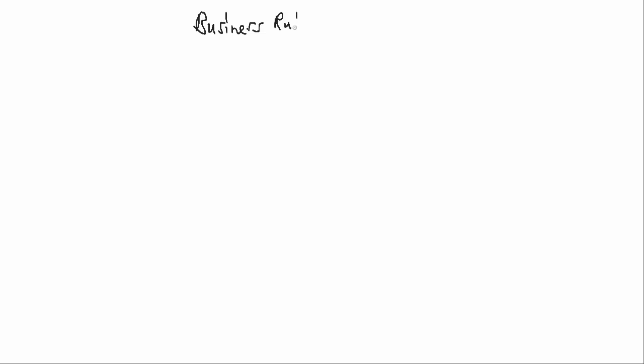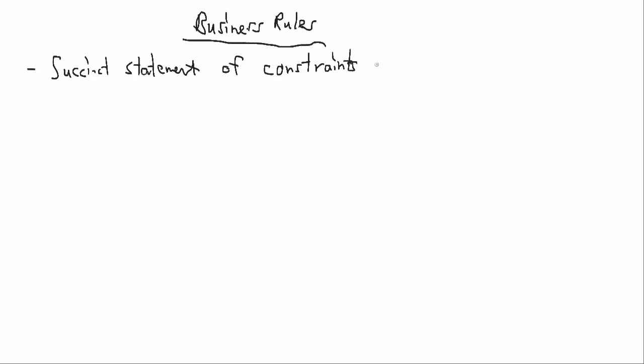We've spent a fair amount of time discussing UML class diagrams, how those are built, and how we can convert those into database tables, fields, and relationships for our accounting information system. But we also want to make sure that we have clearly defined the business rules for our processes. A business rule is a succinct statement of constraints on a business process — succinct meaning described briefly yet informatively.